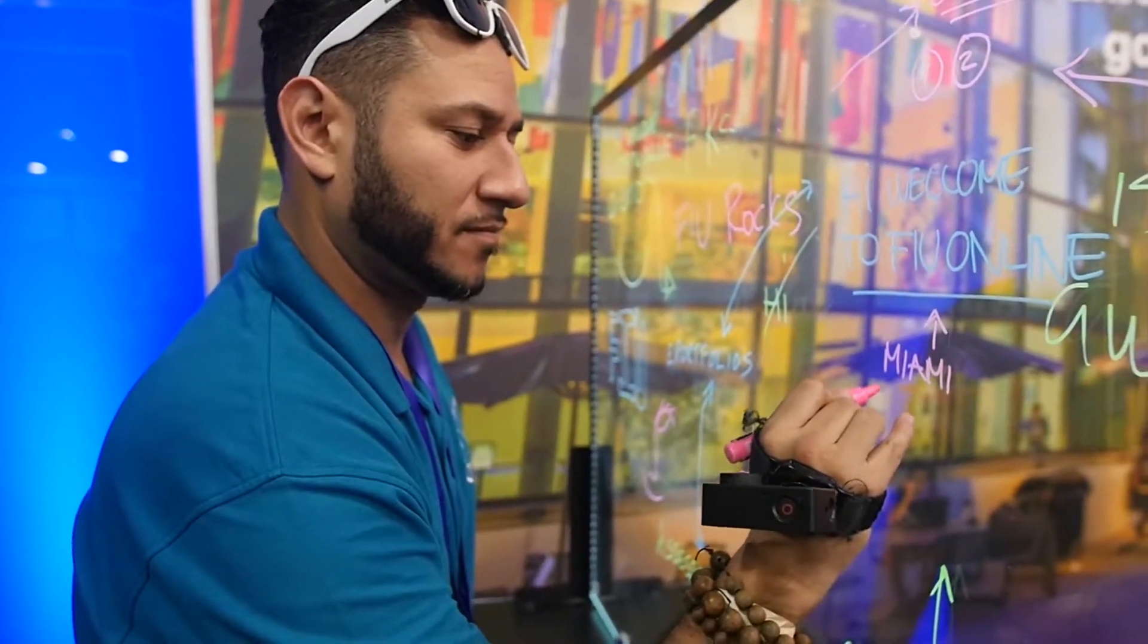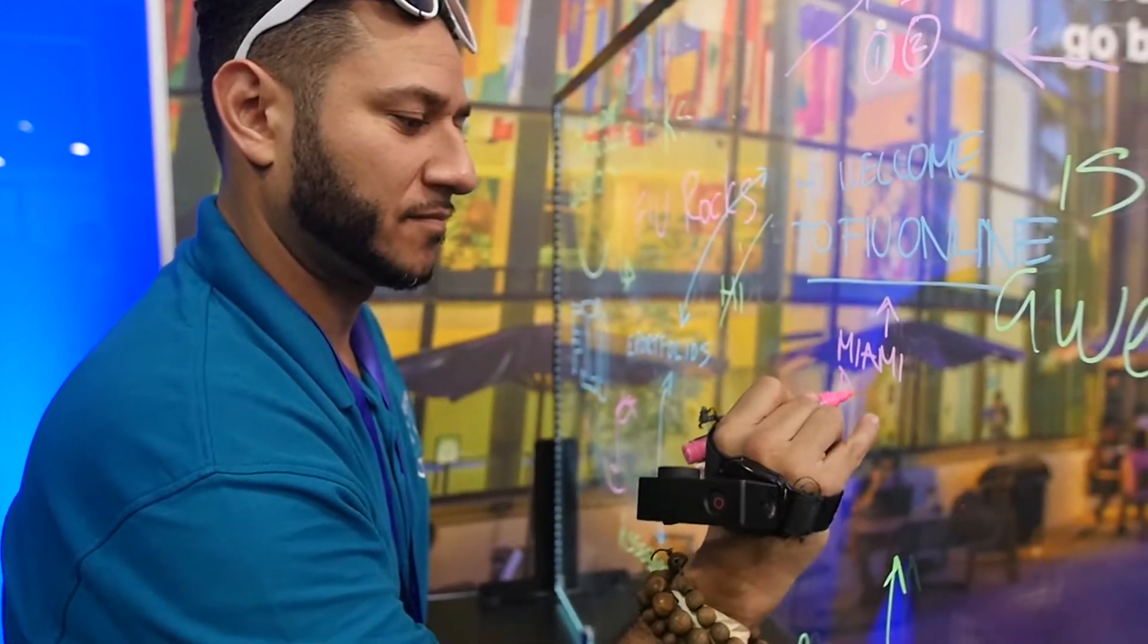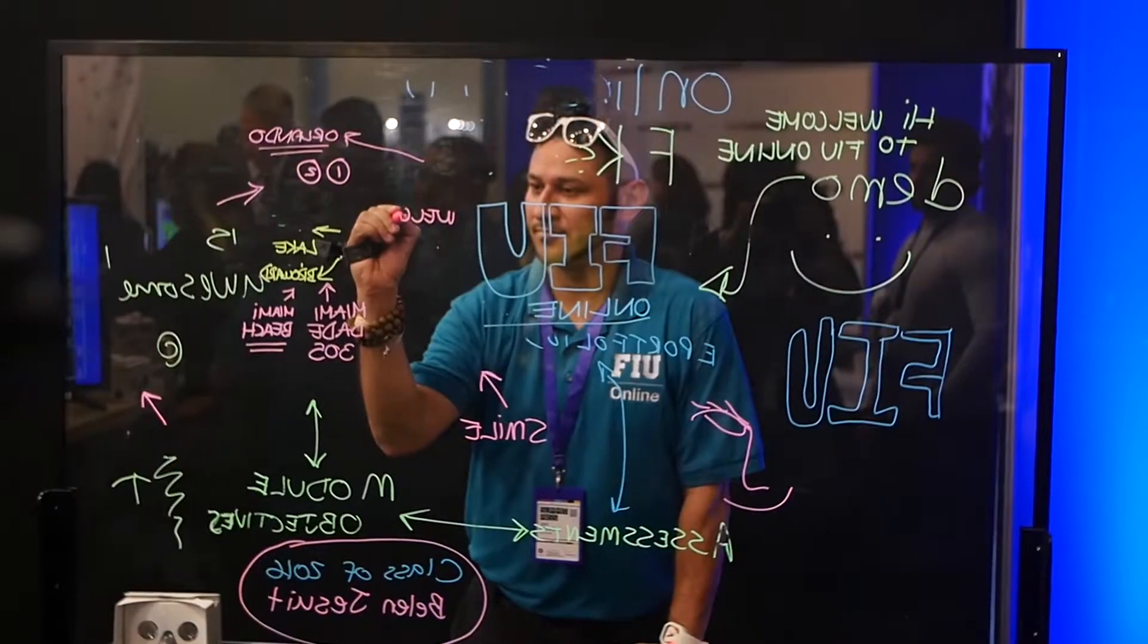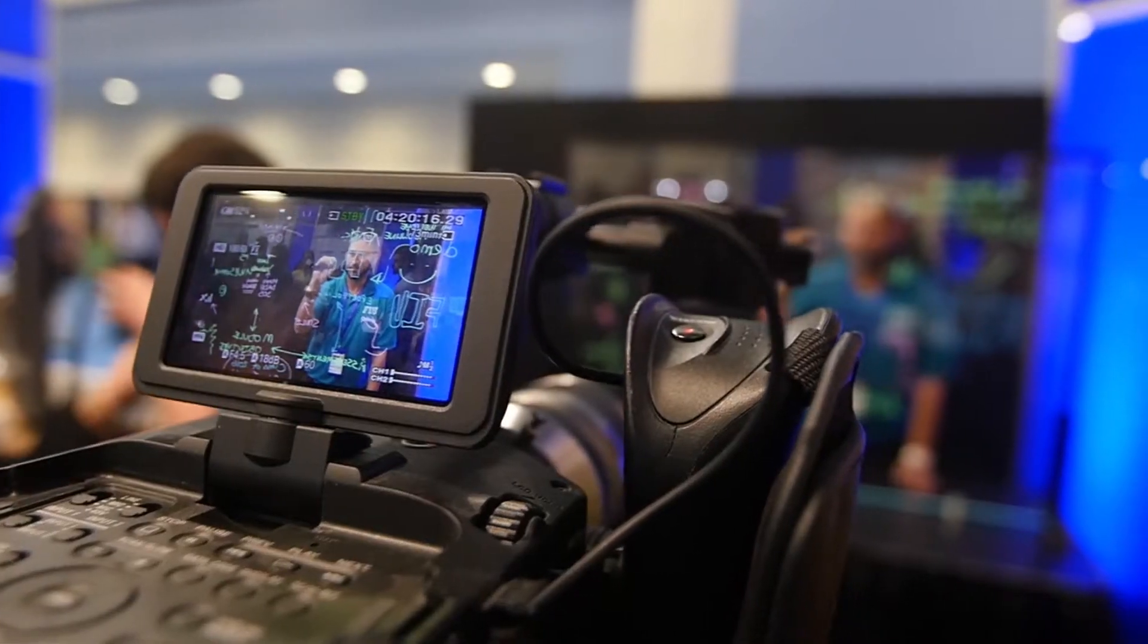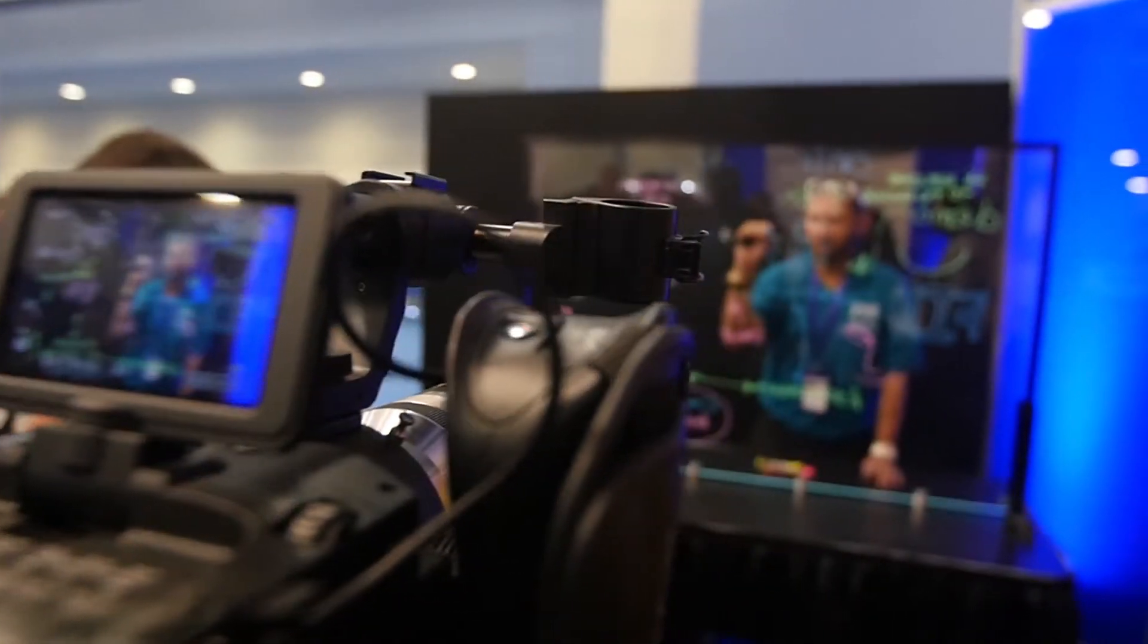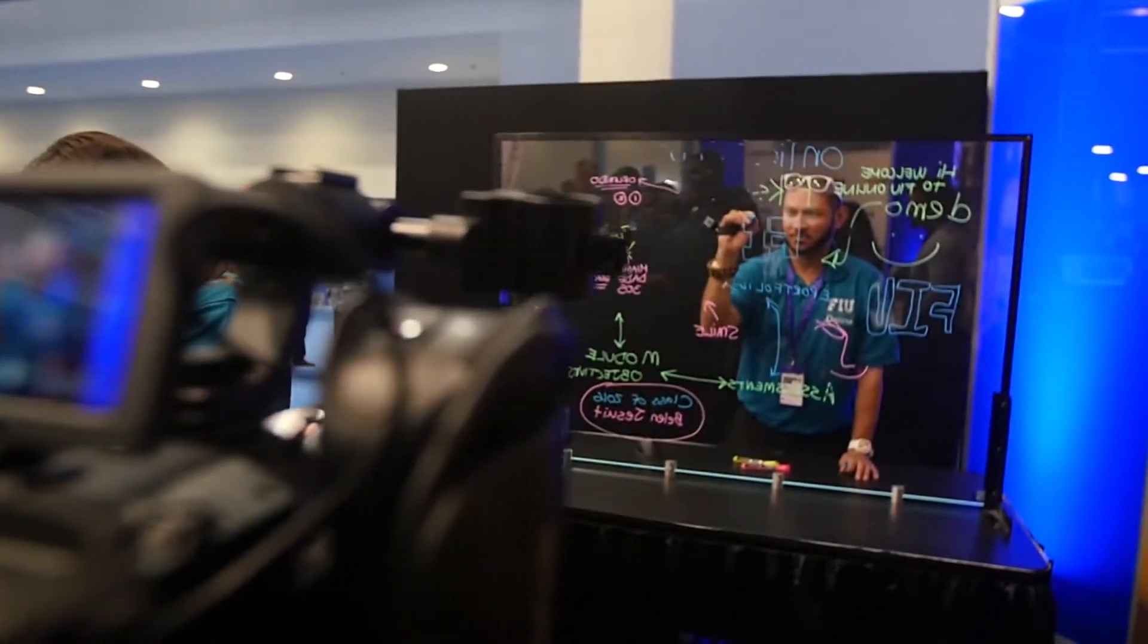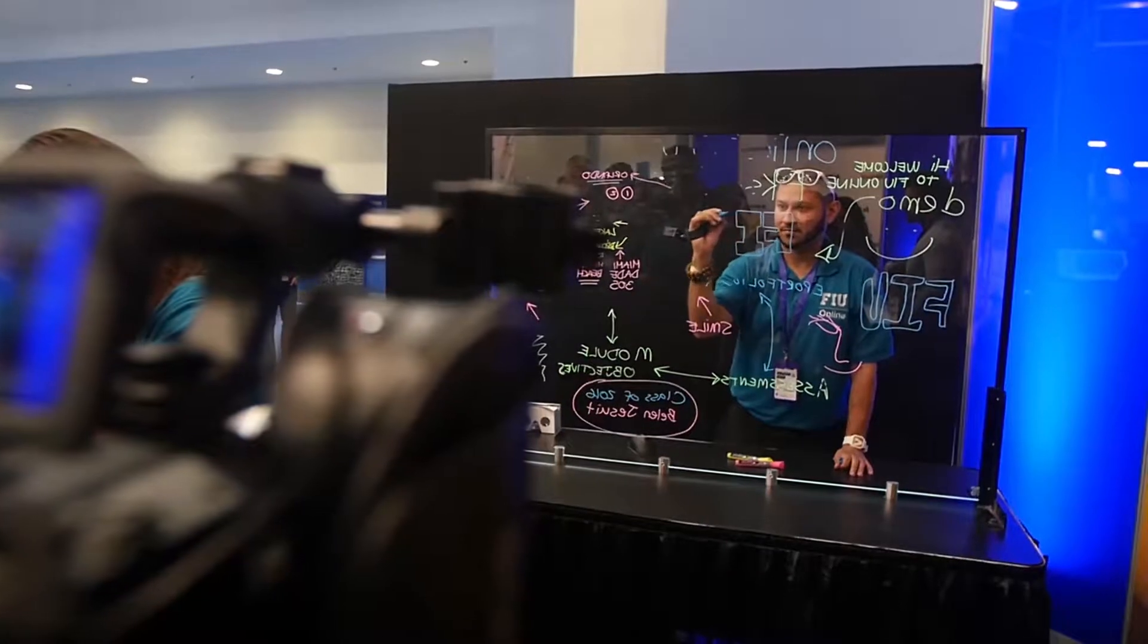What we did instead is swap the board to a glass. What's going on here is that the professor is still writing from left to right, but the camera is capturing the information. What we're doing is inverting the projection of that being captured and then inputting it into a TriCaster.